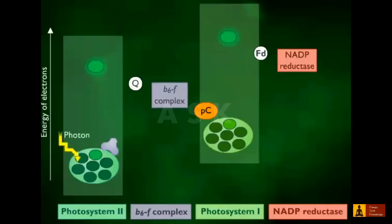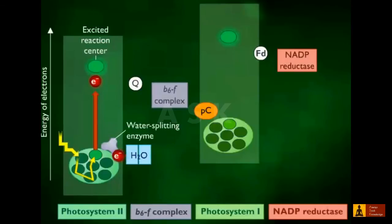First, a photon of light ejects a high-energy electron from Photosystem II. The electron lost from Photosystem II does not return to Photosystem II, but is replaced by an electron generated from the splitting of water and the production of oxygen.